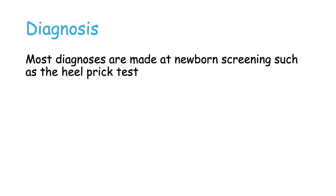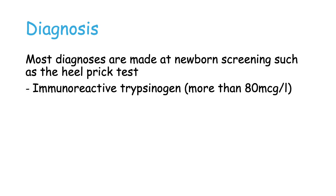In terms of diagnosis, most cases of cystic fibrosis are identified at newborn screening, such as the heel prick test. This test measures for immunoreactive trypsinogen, and if the concentration is greater than 80 micrograms per liter, this indicates cystic fibrosis and further testing is required.